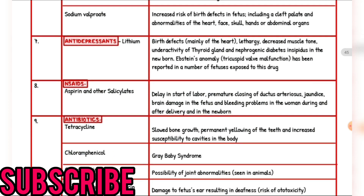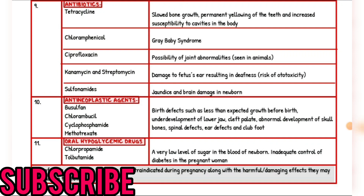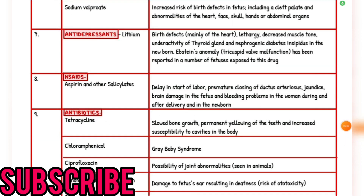Next are the antibiotics. Tetracycline: slowed bone growth, permanent yellowing of the teeth, and increased susceptibility to cavities. Chloramphenicol: gray baby syndrome. Ciprofloxacin: possibility of joint abnormalities. Kanamycin and streptomycin: damage to fetal ears resulting in deafness due to ototoxicity. Sulfonamides: jaundice and brain damage in the newborn. Antineoplastic agents: birth defects such as less than expected growth before birth. Chlorambucil: underdevelopment of the lower jaw, deficient cleft palate, abnormal development of skull bones, spinal defects, ear defects. Oral hypoglycemic drugs: chlorpropamide and tolbutamide — very low blood sugar in the newborn and inadequate control of diabetes in the pregnant woman.